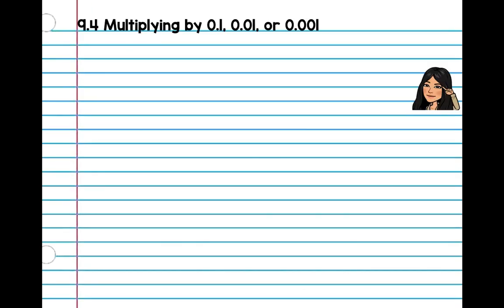Alright, so 9.4, we're going to be multiplying by 0.1, 0.01, and 0.001.